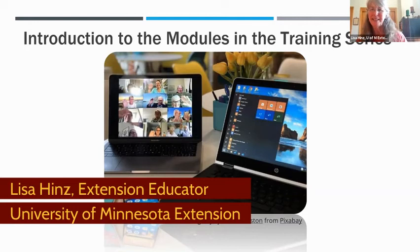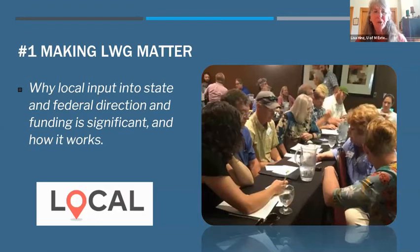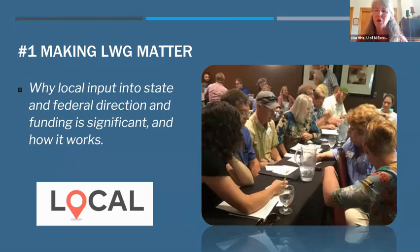The rest of the training series is delivered in four different training recordings, or training modules, each with a specific set of goals and purposes. Session one is about making local working groups matter — the role of local input and state and federal direction and funding, and how its significance matters. Specific topics covered include why local involvement matters, how local working groups impact local conservation, public participation methods that work well, and the intent and process for 2022 in the local working group process.